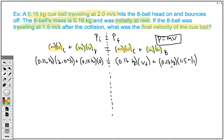Now at this point, it's just simply doing the calculations. 0.16 times 2.0, add that to 0, well, we get 0.32 as our total initial momentum. It has the units newton seconds. Now on the other hand, we're going to be left with 0.16 times V plus 0.18 times 1.5 gives me 0.27 newton seconds.